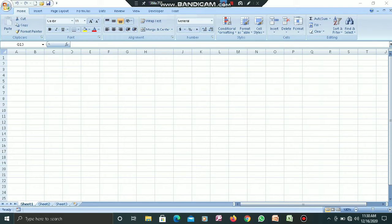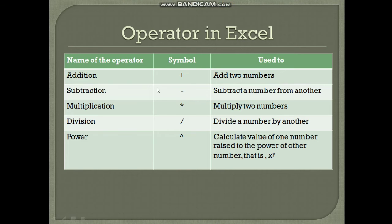Now we will talk about operators in MS Excel. These are the operators of MS Excel as you can see: addition, subtraction, multiplication, division, and power. These are your operators which we use to perform mathematical calculations. The symbol for addition is plus, subtraction, multiplication, division, and power — for example, x to the power of 2, 3, 4, or 5.